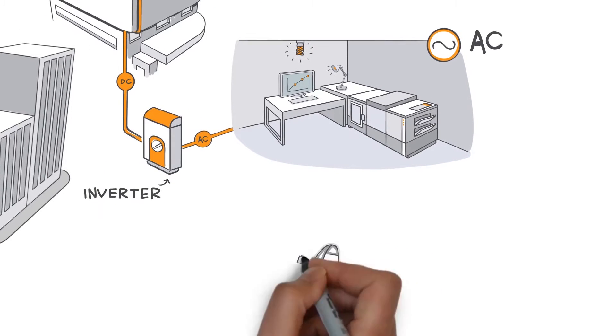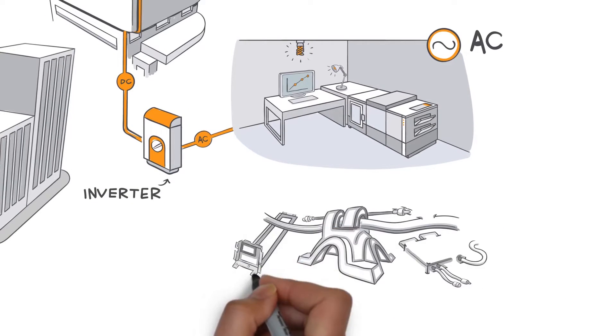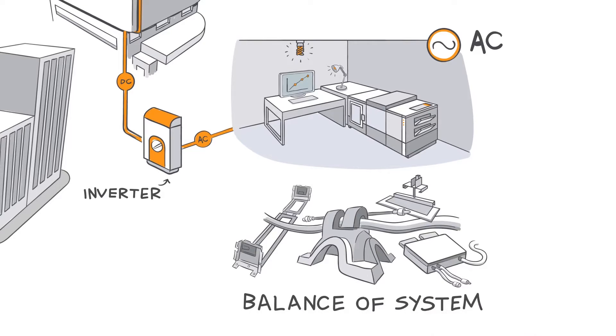By the way, all the other parts of your installation, such as the wiring and switches, are known as the balance of system. Because, well, just saying all the other parts would be too easy.